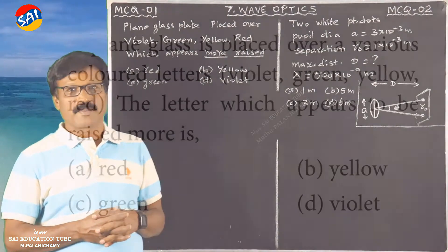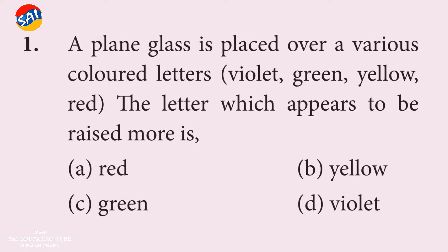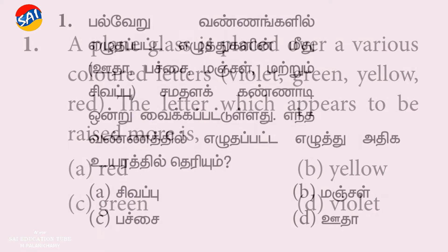Question: A plain glass is placed over various colored letters - Violet, Green, Yellow, Red. The letter which appears to be raised more is?